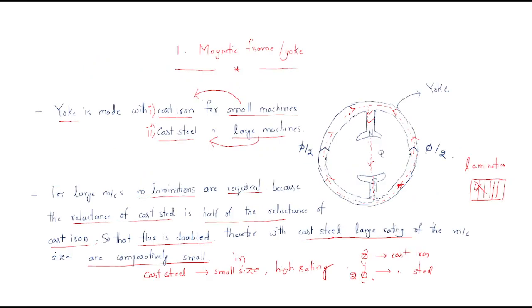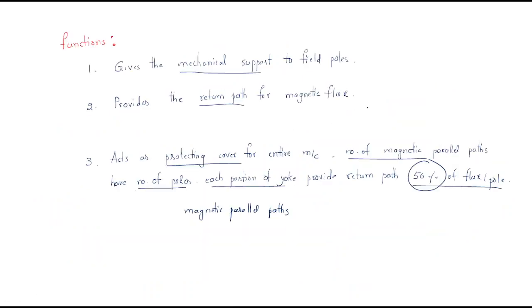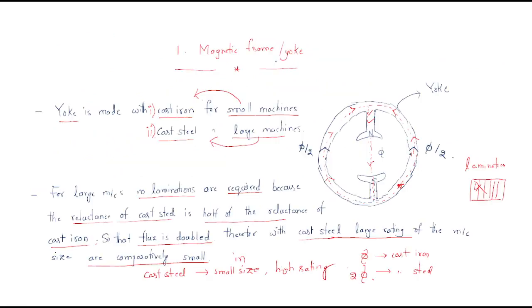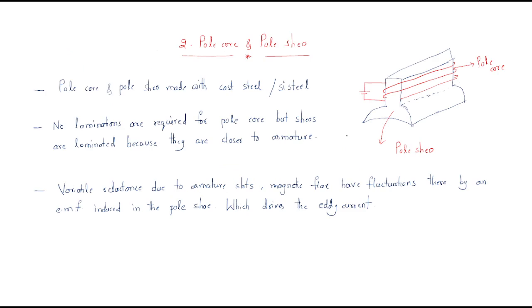So those are the functions of the magnetic frame. Next is the pole core and pole shoe. The pole core and pole shoe are made with cast steel or silicon steel. This complete part is called the pole core, and this part at the bottom is called the pole shoe.